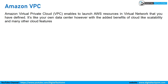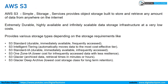Then we have Amazon VPC — Virtual Private Cloud — which enables you to launch AWS resources in a virtual network that you have defined. It is very similar to having your own network, but with added benefits of the cloud like scalability and many other cloud features.